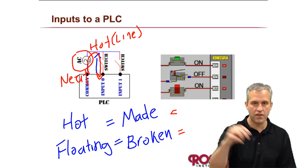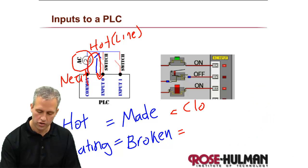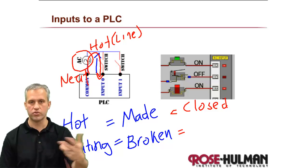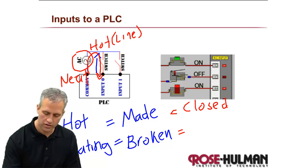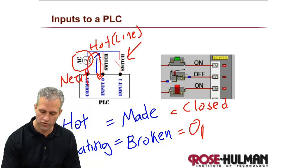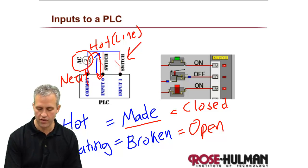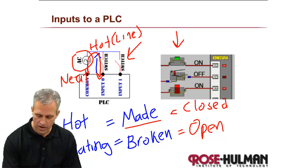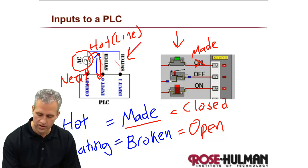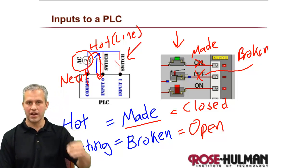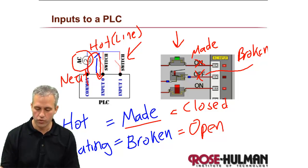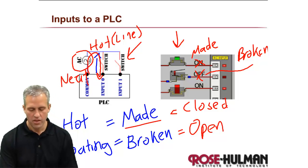People like to confuse things, so there are other names for these states. When connected to hot it's a closed circuit, so 'made' is also called 'closed.' When it's broken, that's also referred to as 'open' — open circuit. In a diagram, a push button being pushed down is 'on,' which is another word for 'made.' Not being pushed is 'off,' which is 'broken.' So technically there are three synonyms: on, made, and closed — and then broken, open, and off.